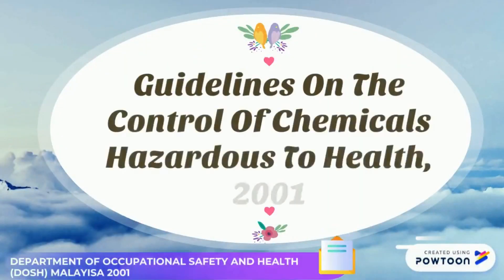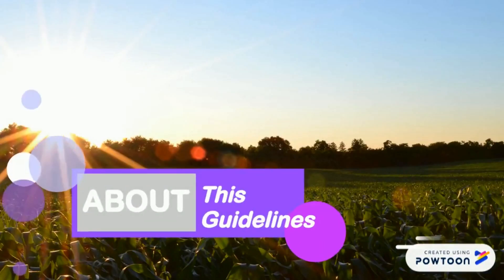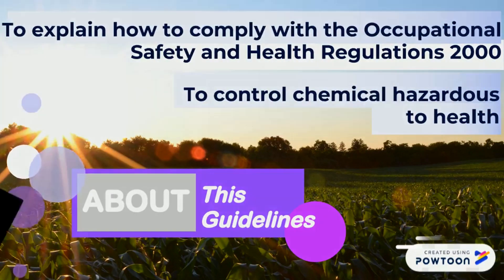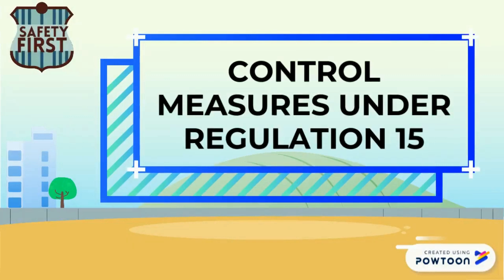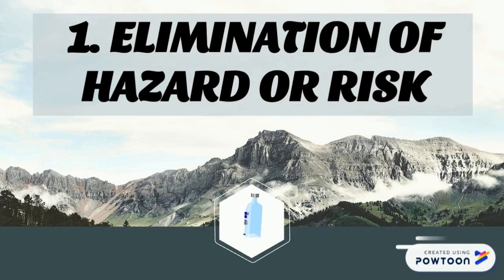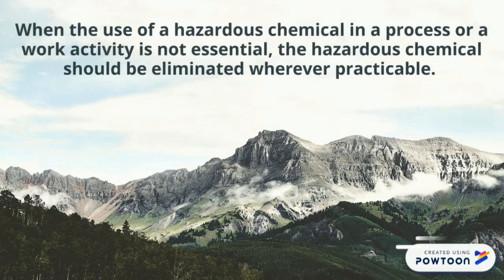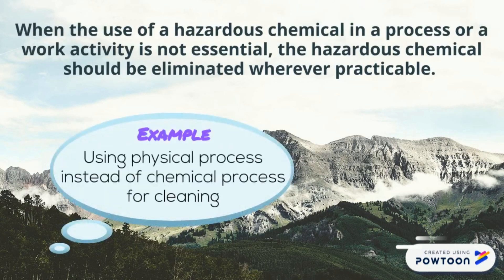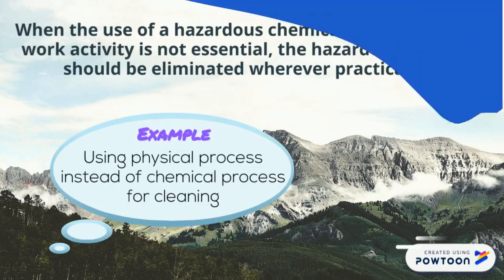Guidelines on the Control of Chemicals Hazardous to Health 2001. This guideline explains how to comply with the Occupational Safety and Health Regulations 2000 to control chemicals hazardous to health. Control measure 1 under Regulation 15(1): elimination of hazard or risk. When the use of a hazardous chemical in a process or work activity is not essential, the hazardous chemical should be eliminated wherever practicable — for example, using a physical process instead of a chemical process for cleaning.